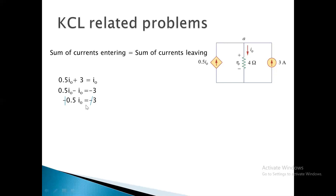Applying KCL and cancelling terms on both sides, we get IO is equal to 3 divided by 0.5. Solving: IO equals 6 amperes.